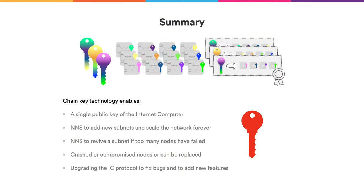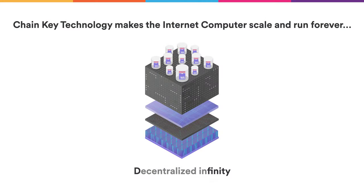Another interesting feature is that the consensus protocol also provides secure randomness to applications, which is very hard to achieve correctly. So, chain key technology allows a single public key for the Internet Computer to verify any message from it. It allows the NNS to add new subnets and scale the network forever, and can revive a subnet if too many nodes have failed. Chain key technology also allows recovery when nodes crash or are compromised, maintaining subnet operations and allowing protocol upgrades to fix bugs and add new features. Really, chain key technology makes the Internet Computer scale and run forever — decentralized infinity.